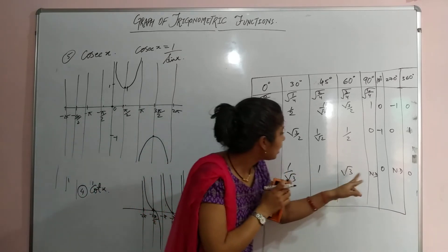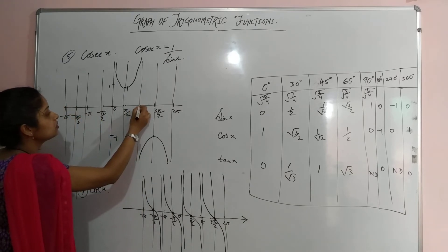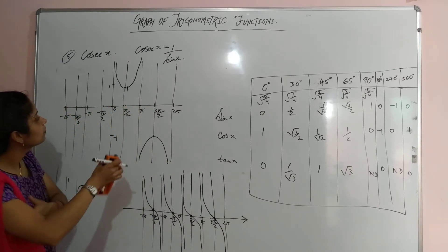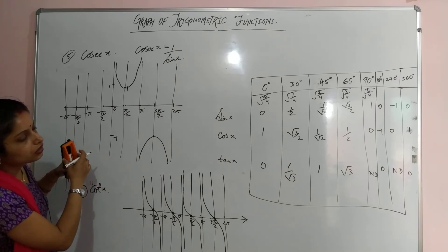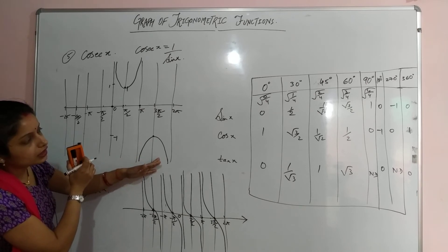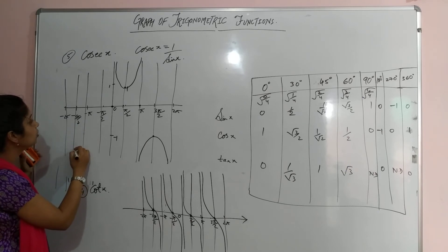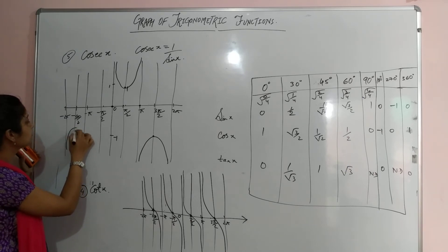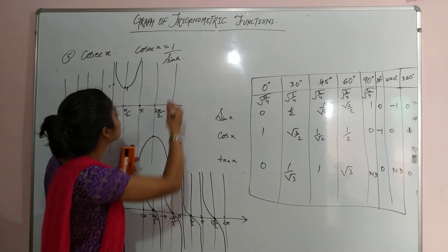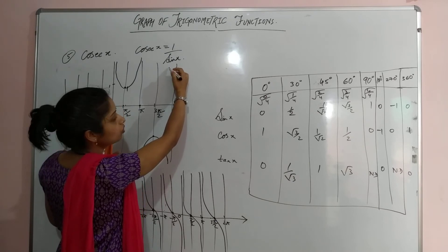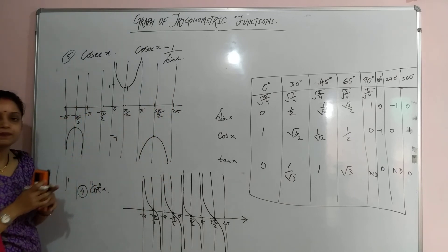At π, sin is 0 so cosec is again infinity. At 2π, sin is 0 again, making cosec infinity there too. Connecting these points, the cosec x graph has U-shaped branches above and below the x-axis, with vertical asymptotes at every multiple of π.